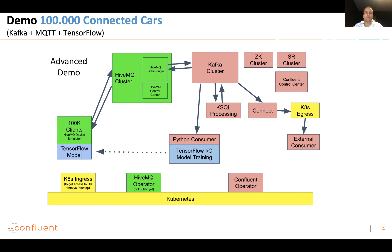We leverage the HiveMQ operator and Confluent operator. This uses the Kubernetes concept of operators with custom resource definitions so that you don't have to manage your cluster. These operators provision it for you, scale it for you, and handle things like failover or rolling upgrades to a new version. It's pretty easy to set this up even if you don't use our scripts but set this up in your own infrastructure.